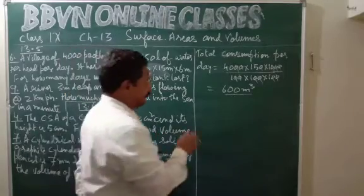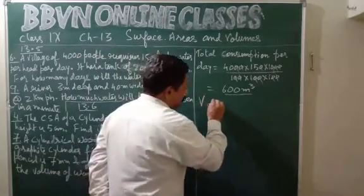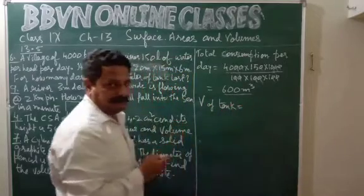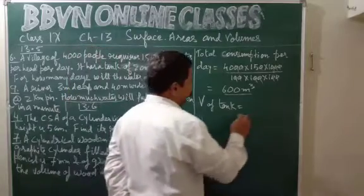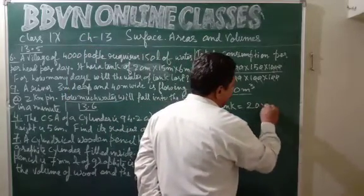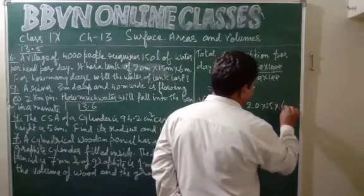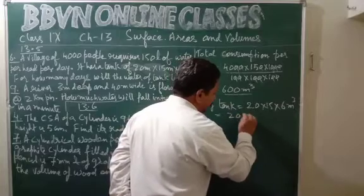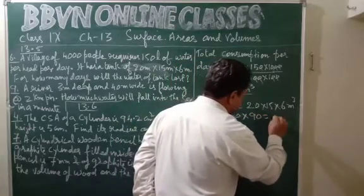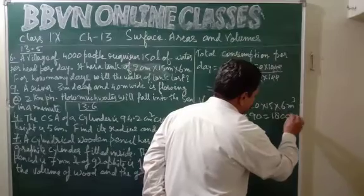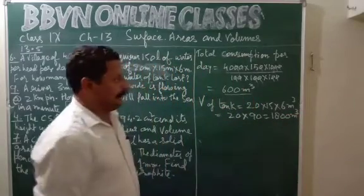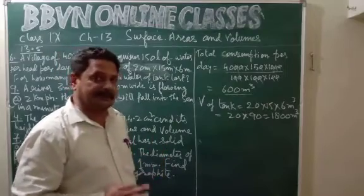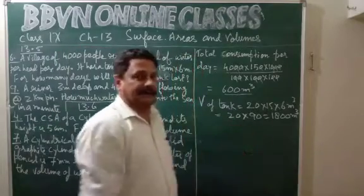Now we'll find the volume of the tank. The tank is in the shape of a cuboid, so volume is L into B into H. Volume equals 20 into 15 into 6 meter cube. This becomes 1800 meter cube. This is the total capacity of the tank — the total water that is there in the tank.